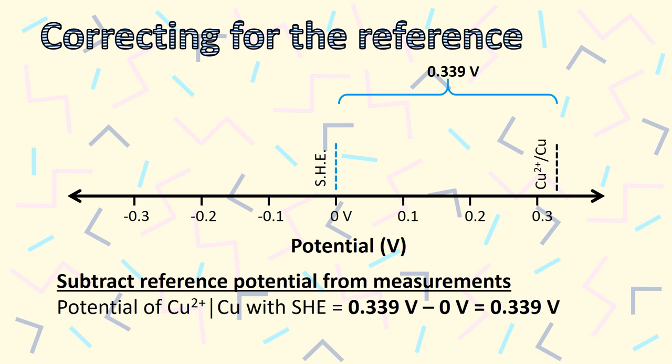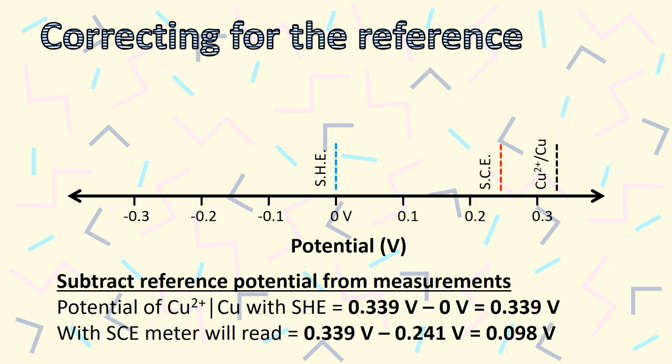Since using an SHE isn't convenient, we're going to use an SCE, which has a non-zero potential. So now our meter is going to read 0.098 volts instead. If we wanted to report the standard reduction potential for copper, we would need to add the 0.241 volts back in to get 0.339 volts.